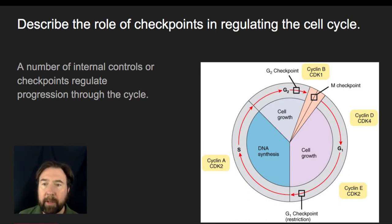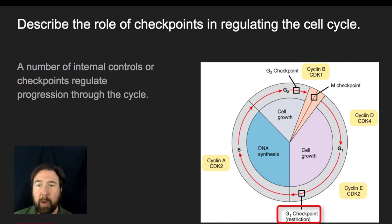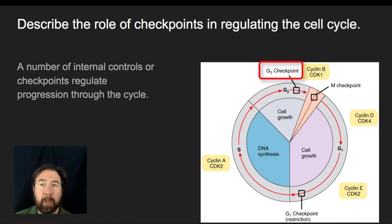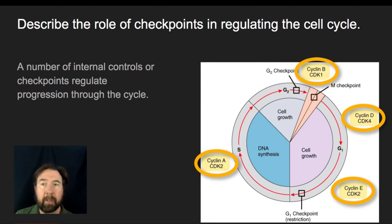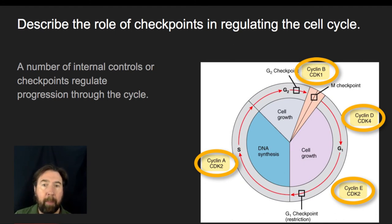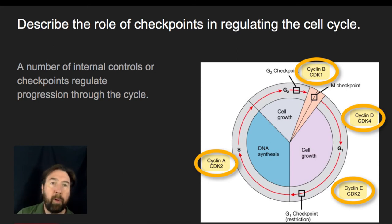There are a couple of key checkpoints: most notably the G1 checkpoint, which is a restriction of cell growth before we undergo cell division; the G2 checkpoint, which is a checkpoint before we would enter mitosis; and then the M checkpoint to see that cell division is proceeding properly. Also notable are cyclins and CDKs — cyclin-dependent kinases — which are enzymes that help with advancing the cell cycle forward, and cyclins are compounds that help regulate whether the cell is ready to move on to the next checkpoint.